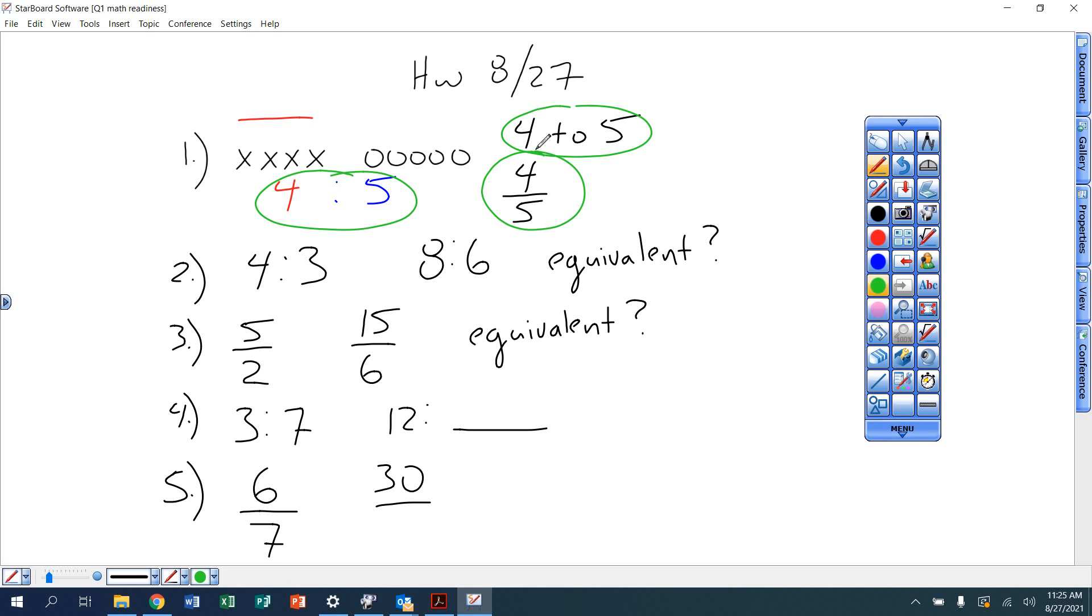Equivalent fractions: if you're taking those numbers and multiplying by the same thing to get both, that means they're equivalent. Like this 4 right here, if I times that by 2 gives me 8. If I times that same number 3 by 2, does it give me 6? Yes it does.